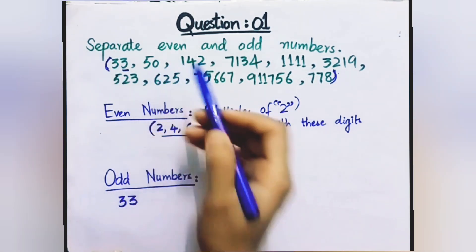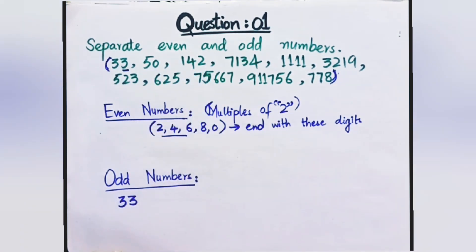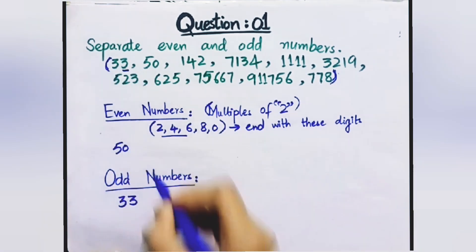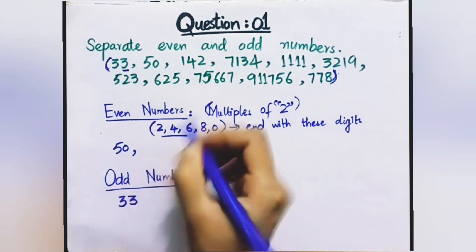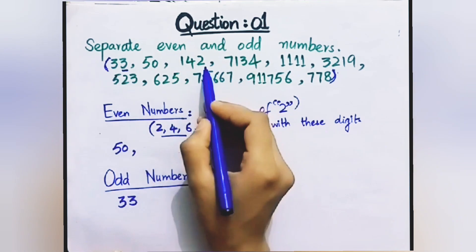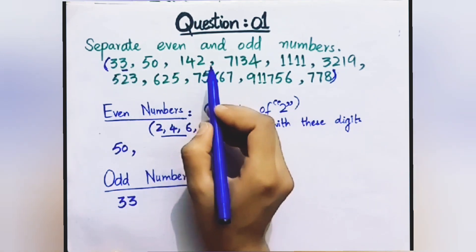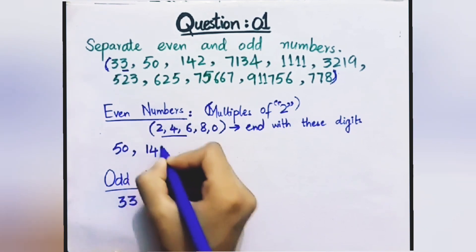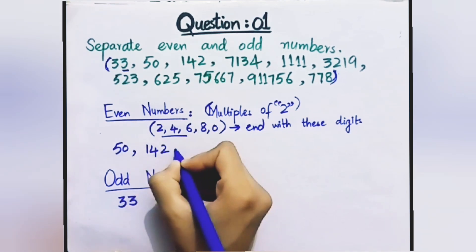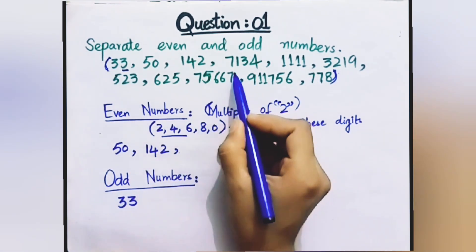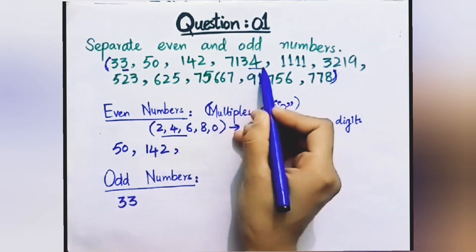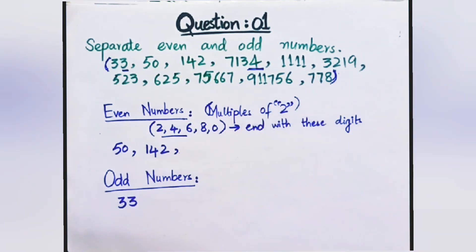Next we have 50. This ends in 0, so this is an even number. Next, 142 — last digit is 2, that is an even number. Next, 7134 — last digit is 4, which is even, so this is an even number.